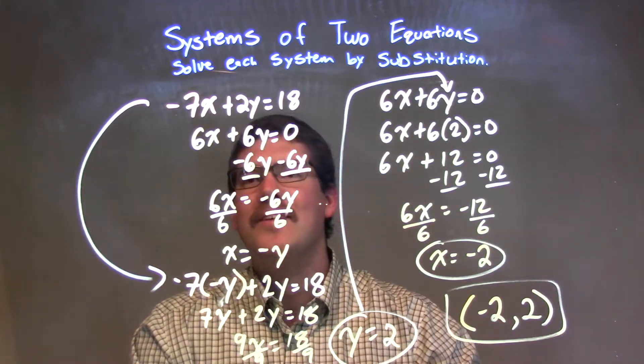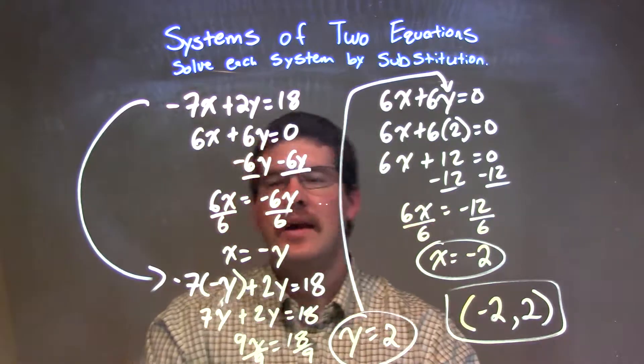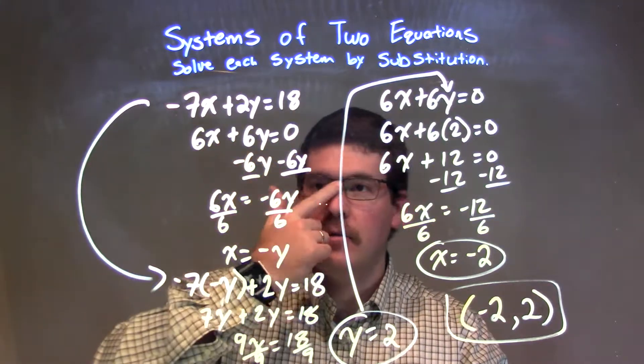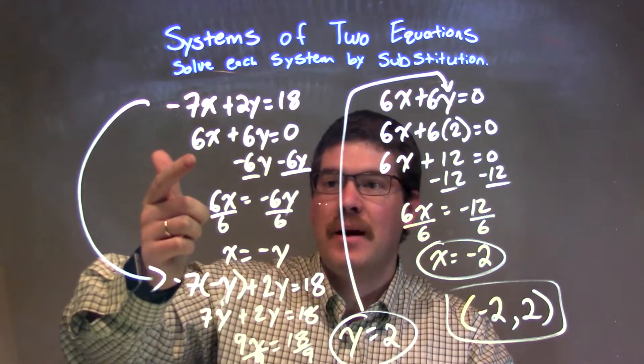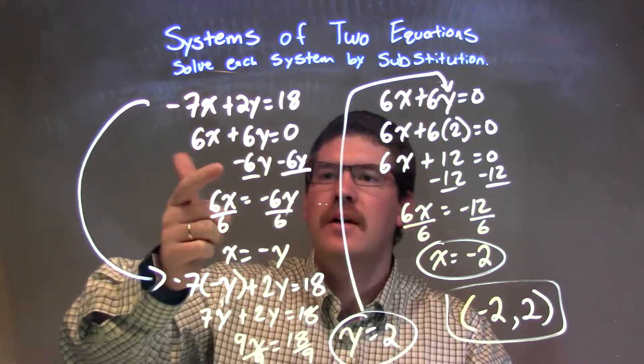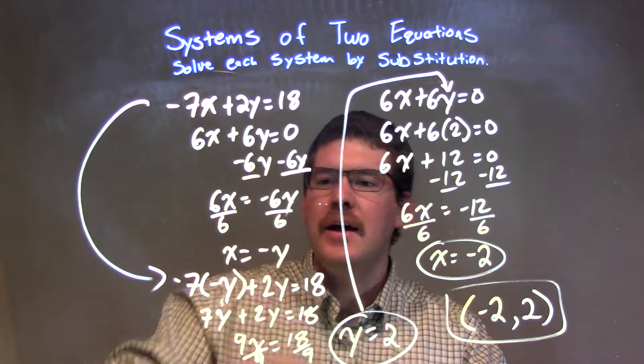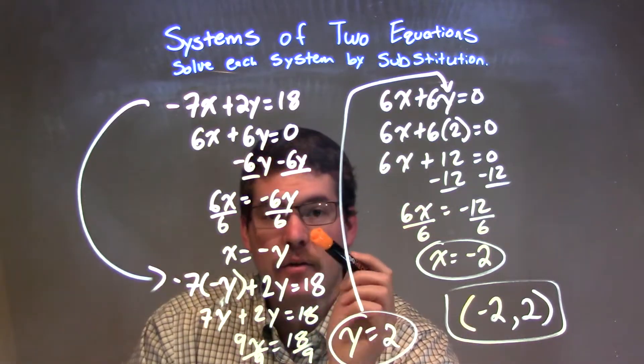So let's recap. We're given negative 7x plus 2y equals 18, and 6x plus 6y equals 0. The second equation, I can see I get x by itself fairly quickly. Subtract the 6y from both sides, divided both sides by 6. I got x is equal to negative y.